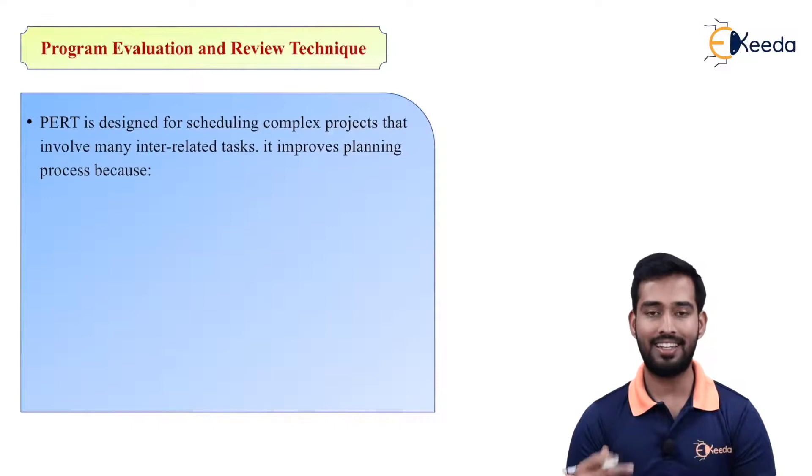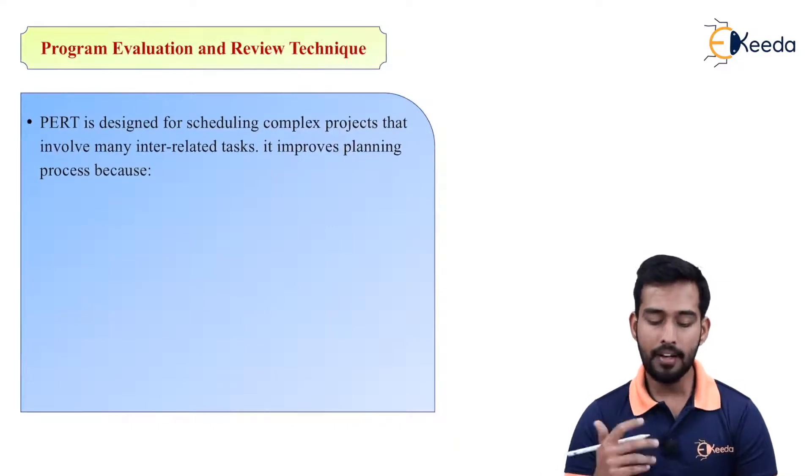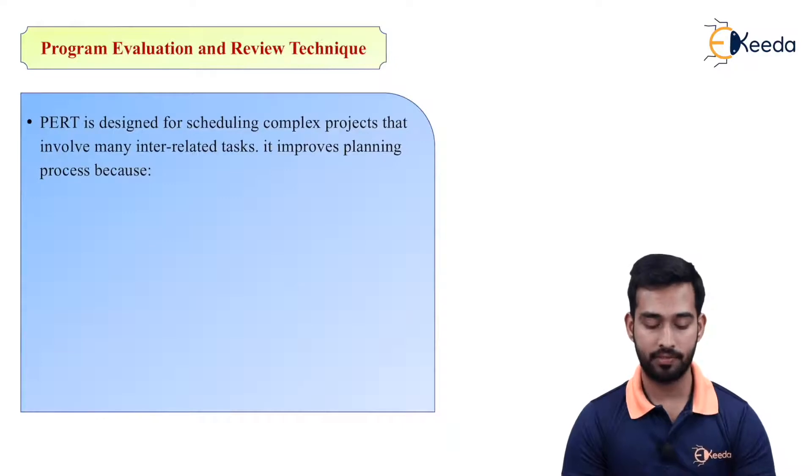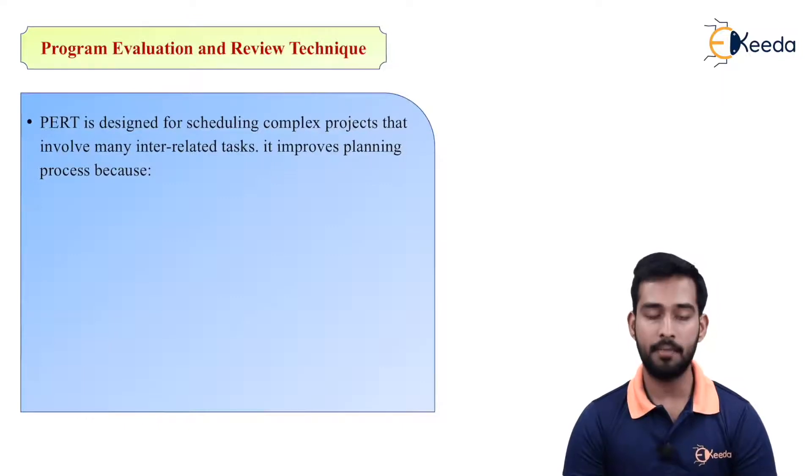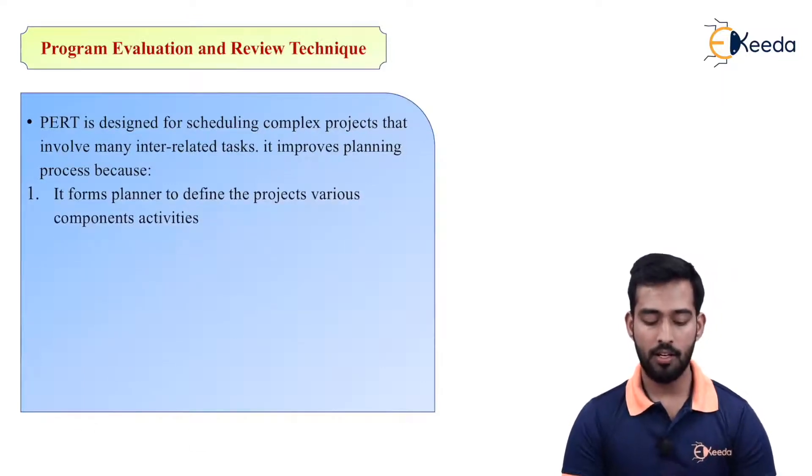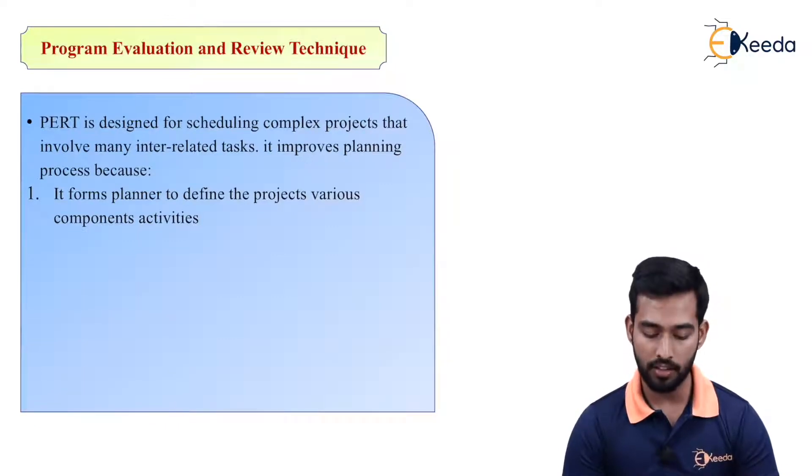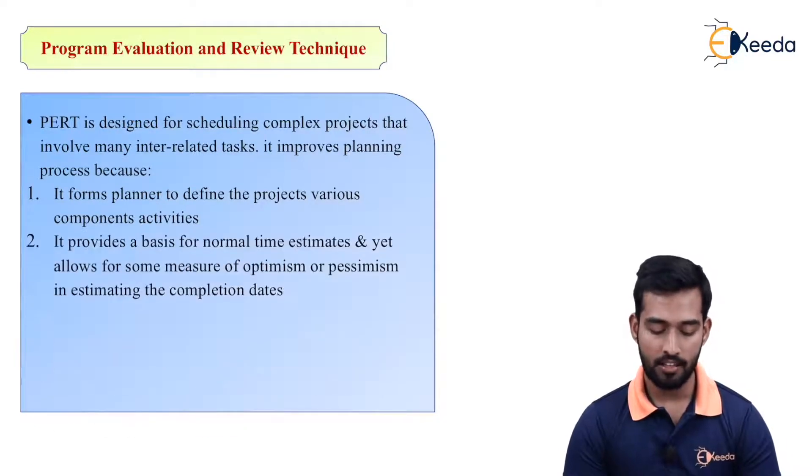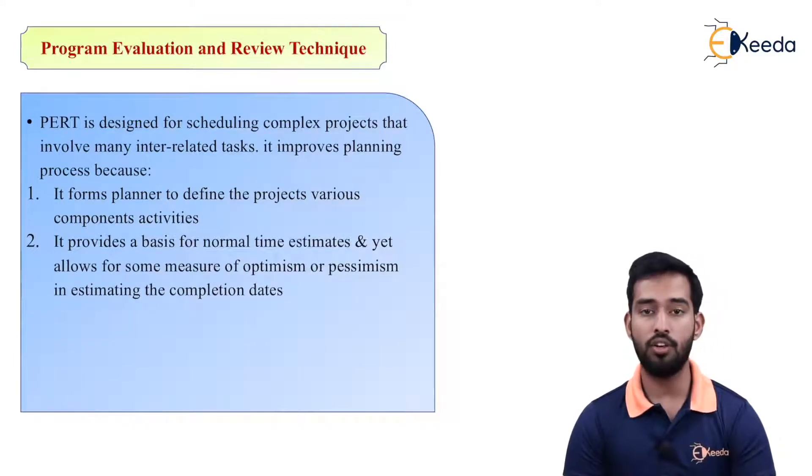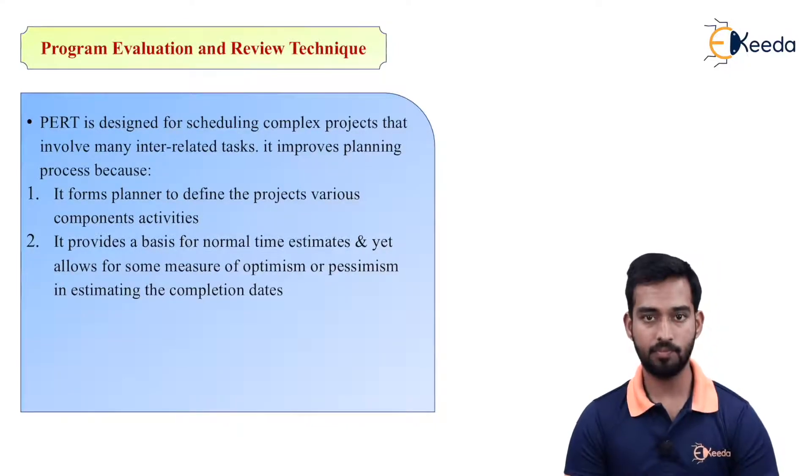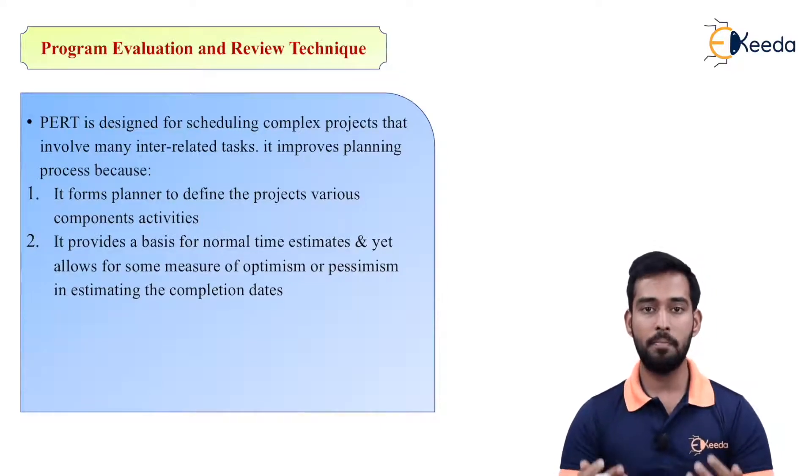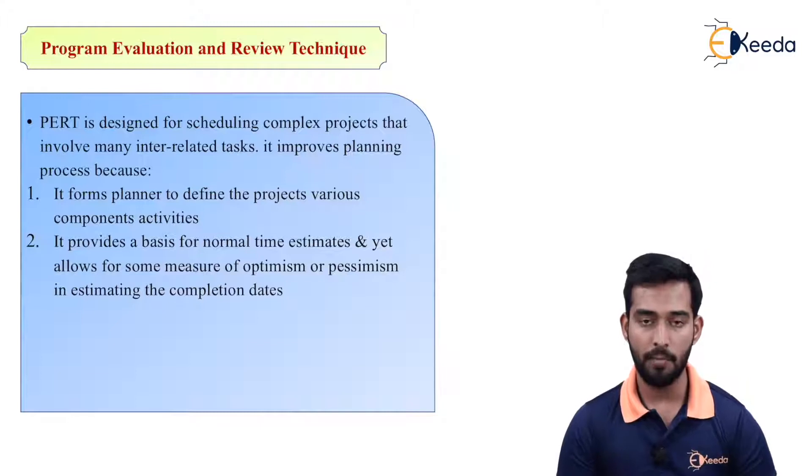PERT is designed for scheduling complex projects that involve many interrelated tasks. It improves planning process because it helps the planner to define the project's various component activities. Then it provides a basis for normal time estimates and yet allows for some measure of optimism and pessimism in estimating the completion dates. So it will give you optimistic as well as pessimistic time for the completion of your project.